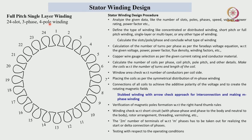Then we calculate the number of turns per phase as per Faraday's law of voltage equation. Then we make the coils and insert them one by one into different slots. After inserting all coils, using the stubbed winding and arrow check approach, we make the connections. Then we verify magnetic pole formation with the right hand thumb rule, check for short circuits, and finally bring all six terminals out from the machine for testing.